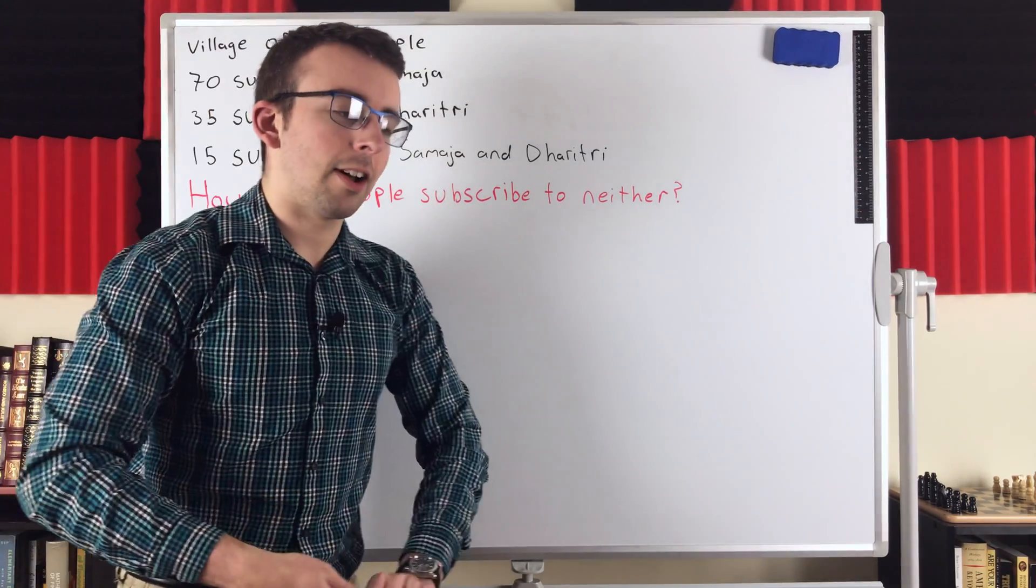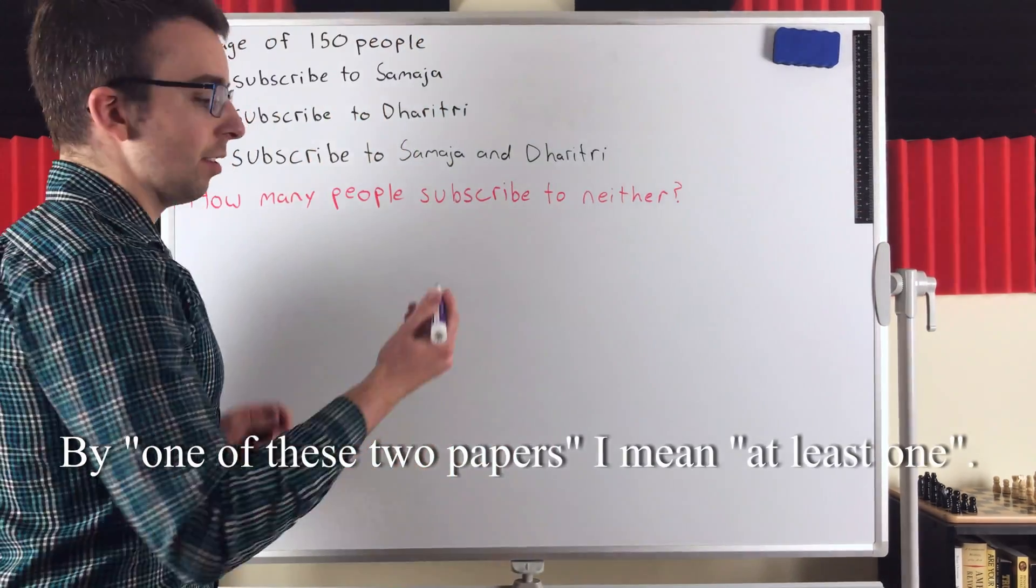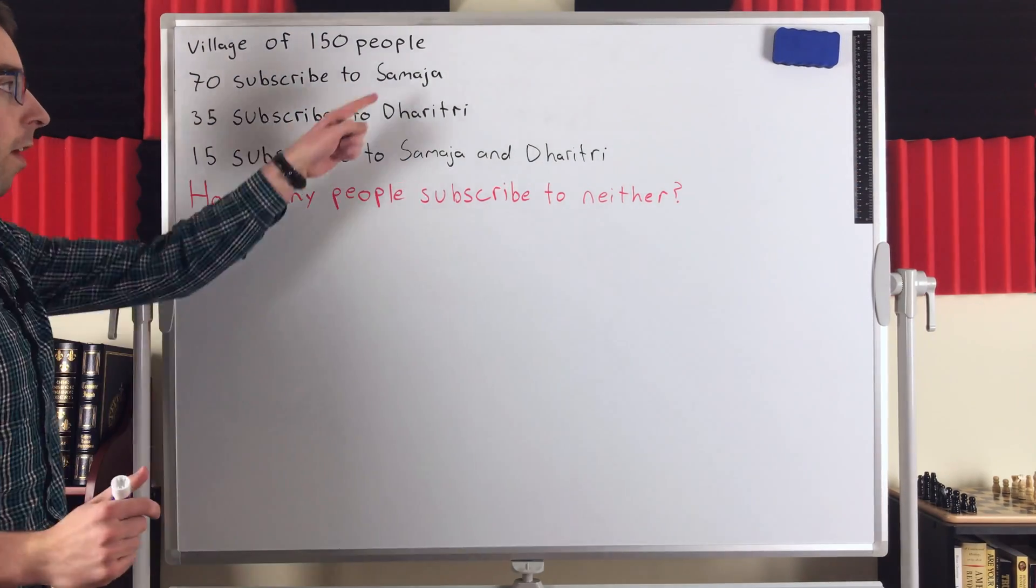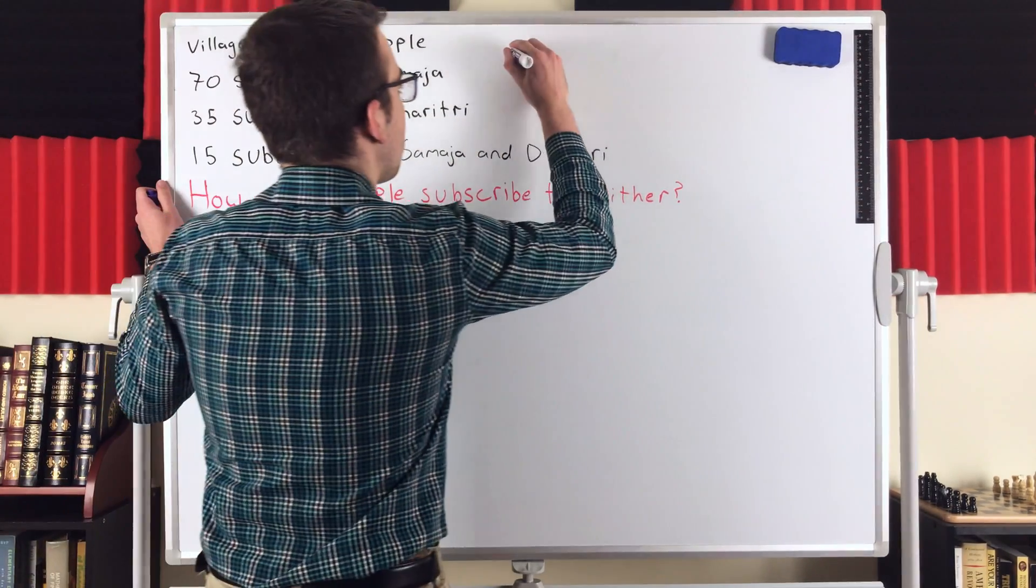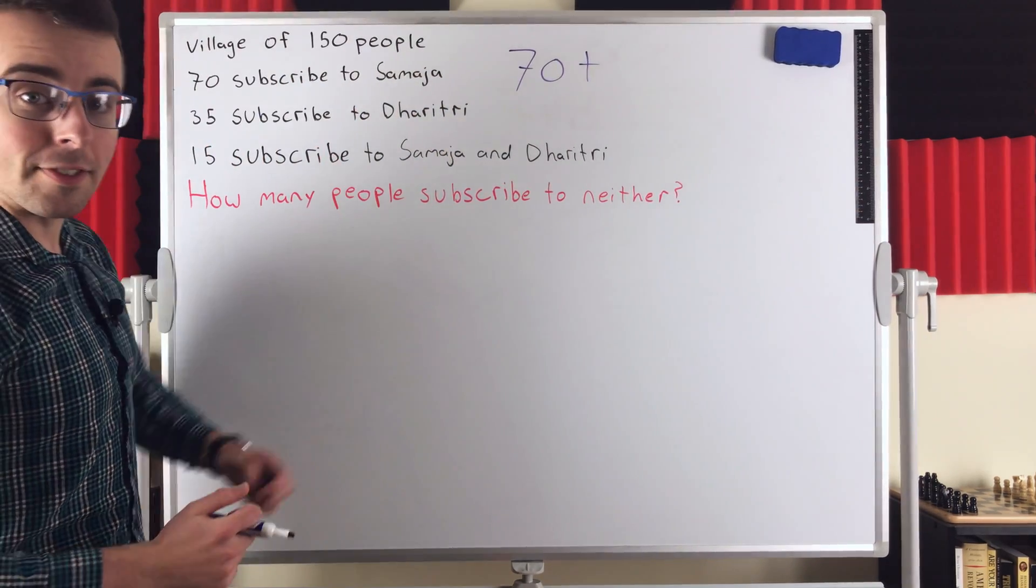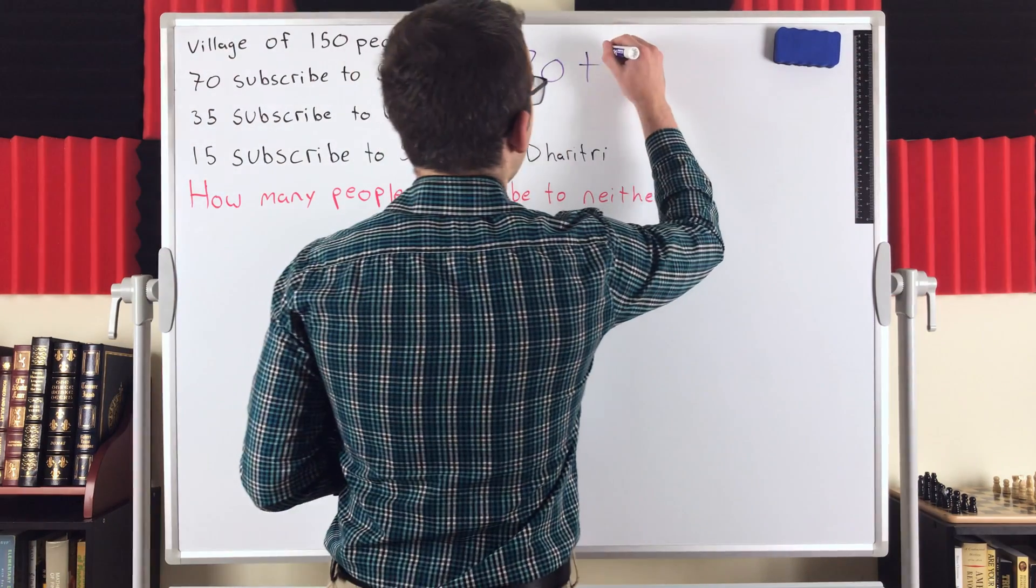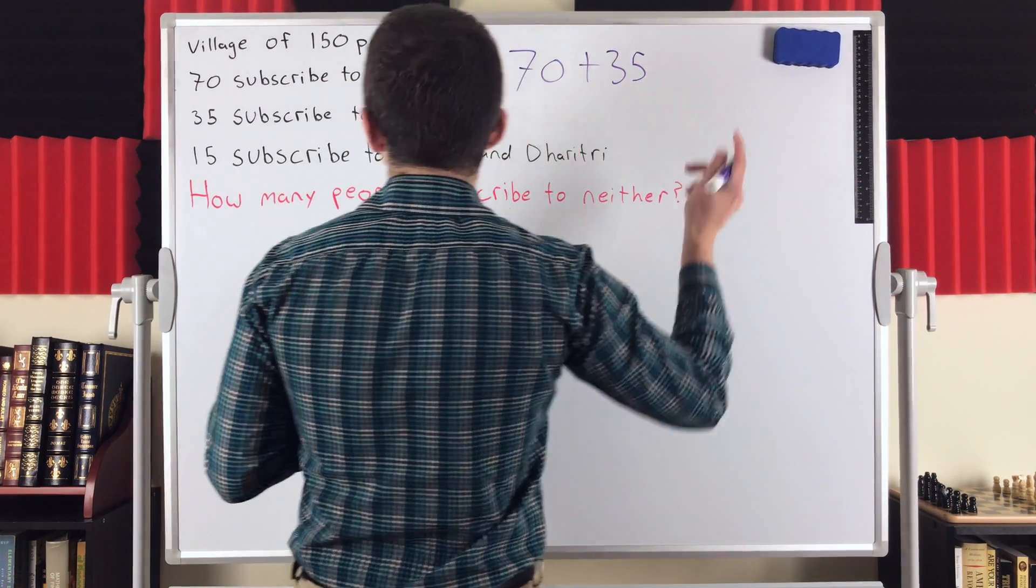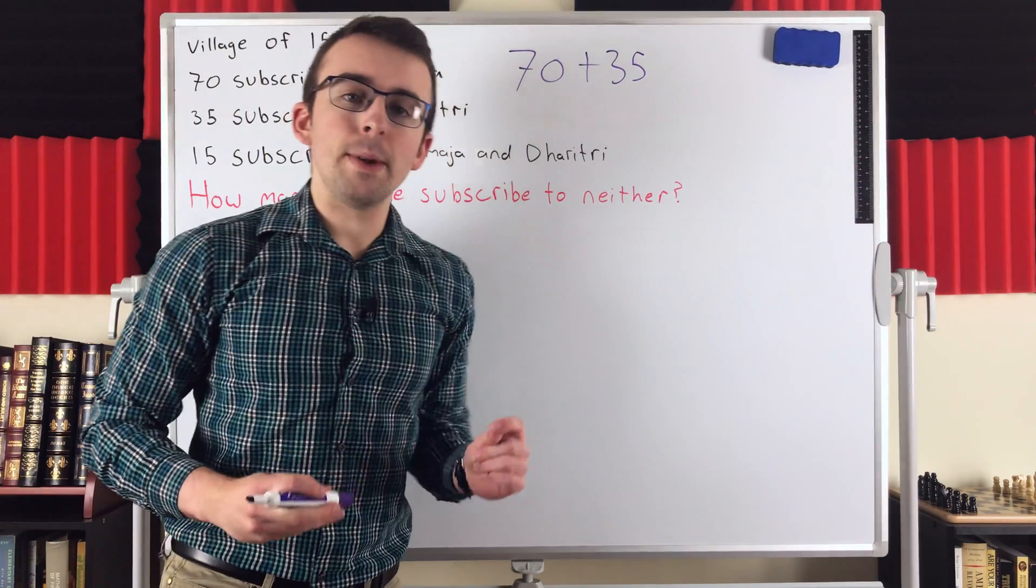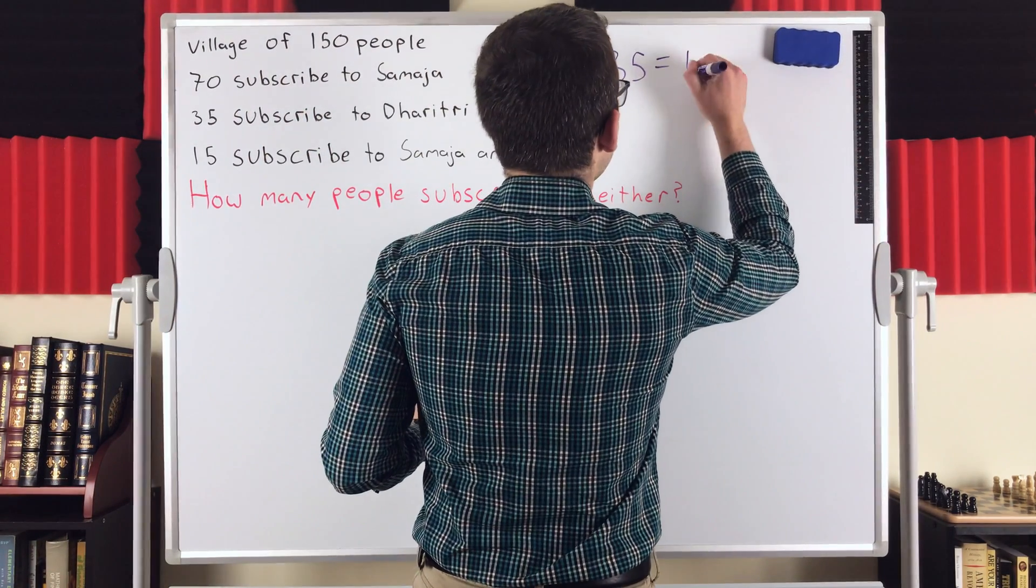So here's how you might first try to find the number of people who are subscribed to one of these two papers. You might say, okay, 70 people are subscribed to the Samajah. So let's count them, 70. Then you might say, 35 people are subscribed to Dhritri. All right, so let's add those into the count. Then, since those are the only papers we're considering, that must be the number of people subscribed to a paper. So you'd say, all right, that's 105.